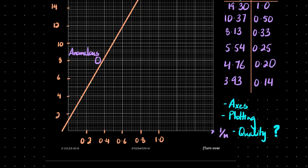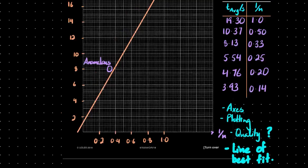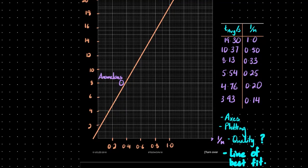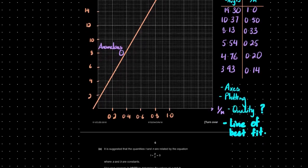For the line of best fit mark, there must be an even spread of points about the line, and only one anomalous point is allowed. Draw the line very thin in one smooth movement with a really sharp pencil to avoid overwriting. A thick line, as I have here, would cost you this mark — so take care to keep it as fine as possible.